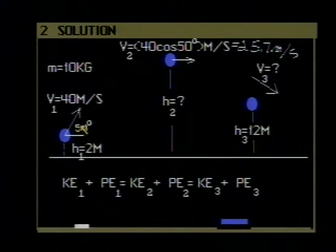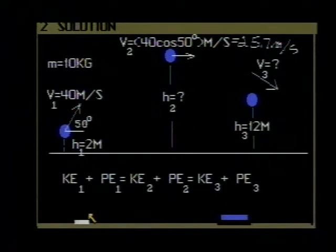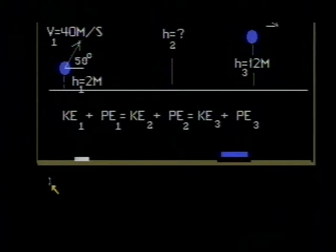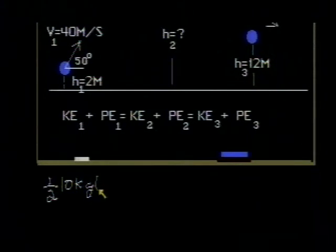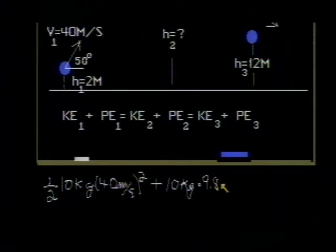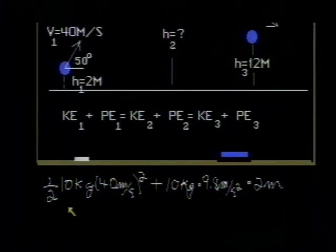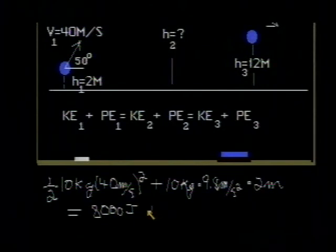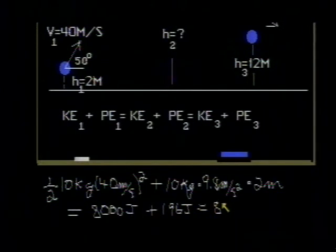Let's use the data at point 1 to calculate the total mechanical energy. The kinetic energy at point 1 is one-half times 10 kilograms times 40 meters per second squared, plus the potential energy which is the 10-kilogram mass times g (9.8 meters per second squared) times 2 meters. Working through that calculation gives 8,000 joules plus 196 joules, for a total of 8,200 joules.